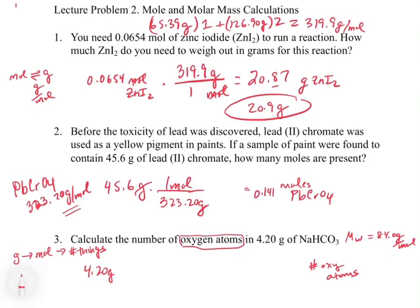There's one important detail: this problem asks for oxygen atoms only. For every one mole of NaHCO₃, there are three moles of oxygen — that comes from the subscript three in the formula. So if I have one mole of NaHCO₃, I have three moles of oxygen. That ratio will be critical in the final step. In fact, you already recognized this when computing the molecular weight, because you multiplied the atomic mass of oxygen by three.